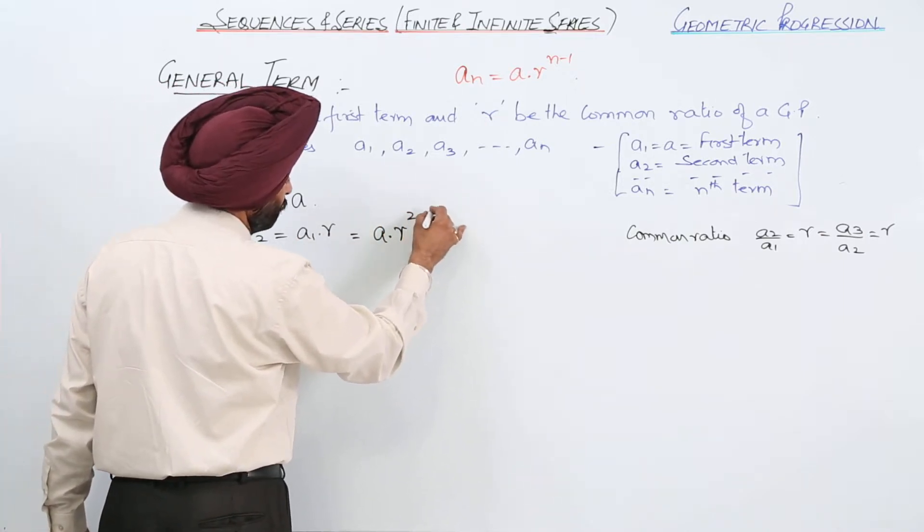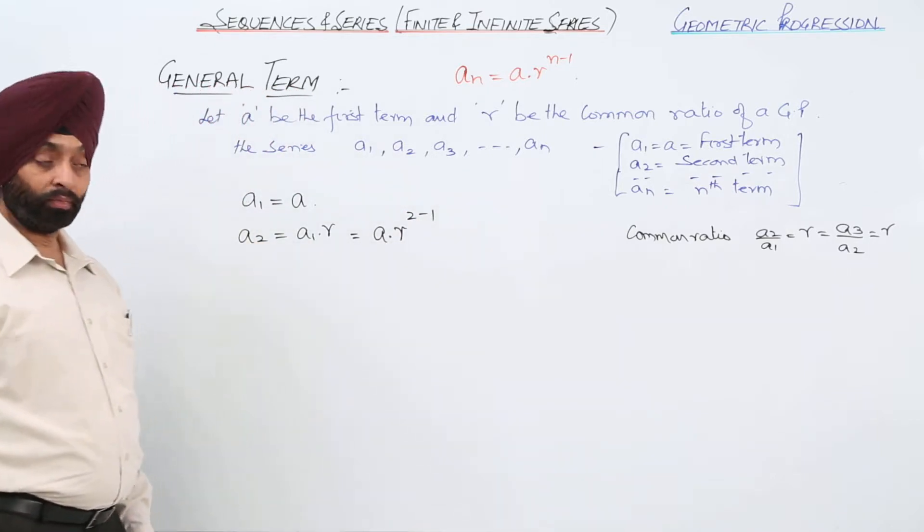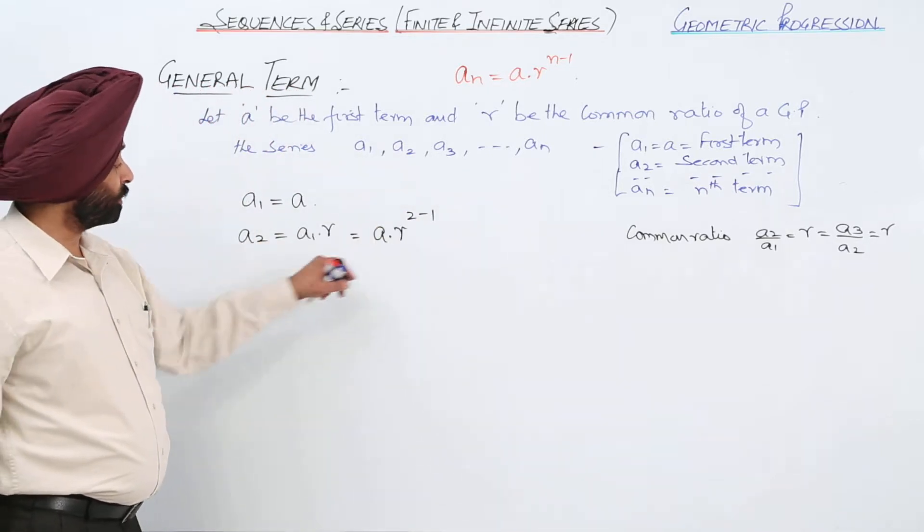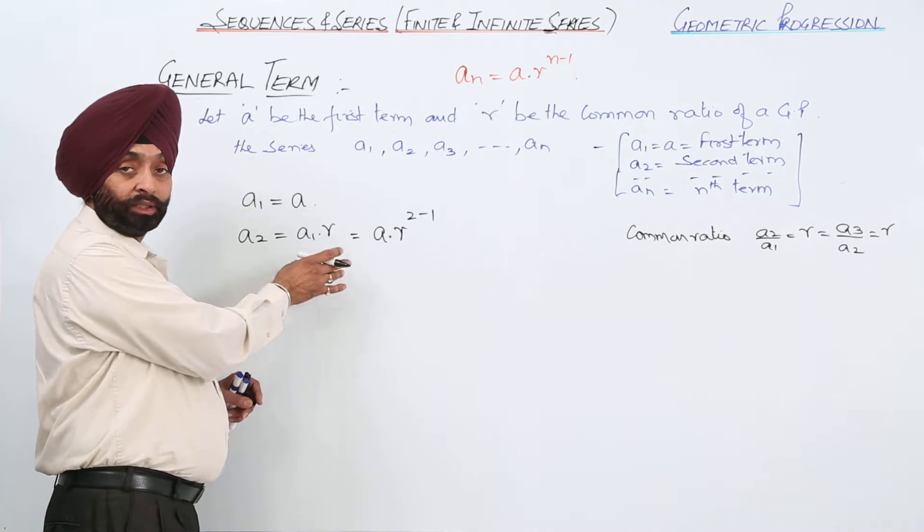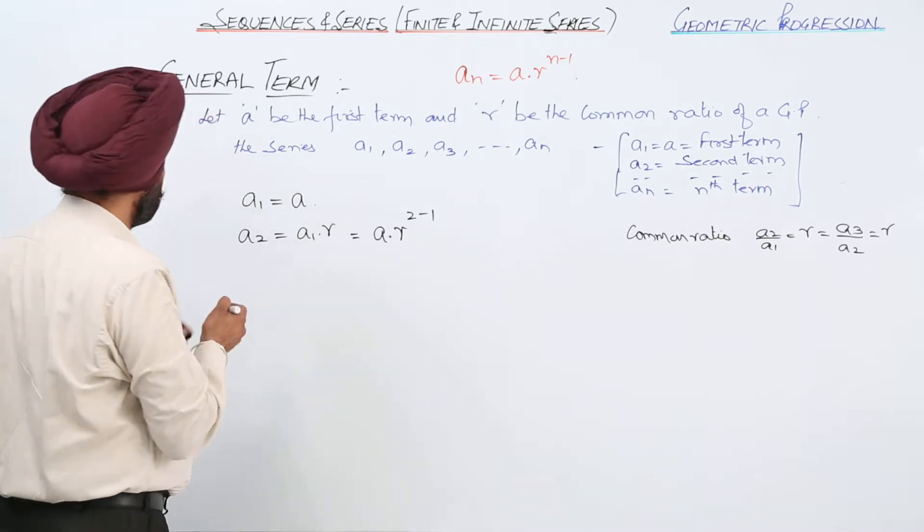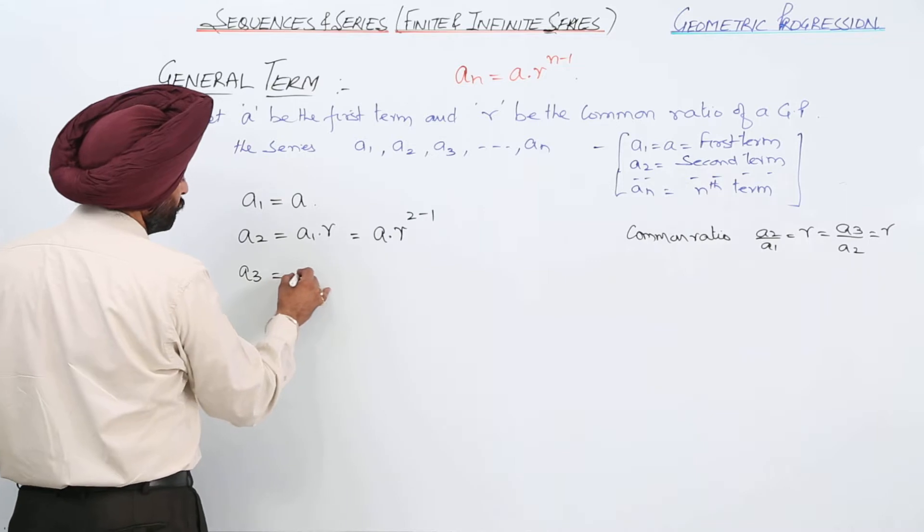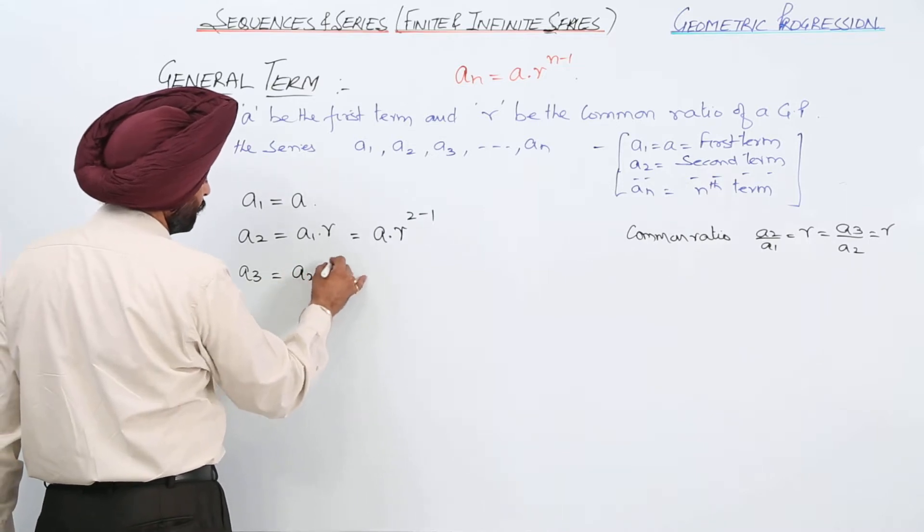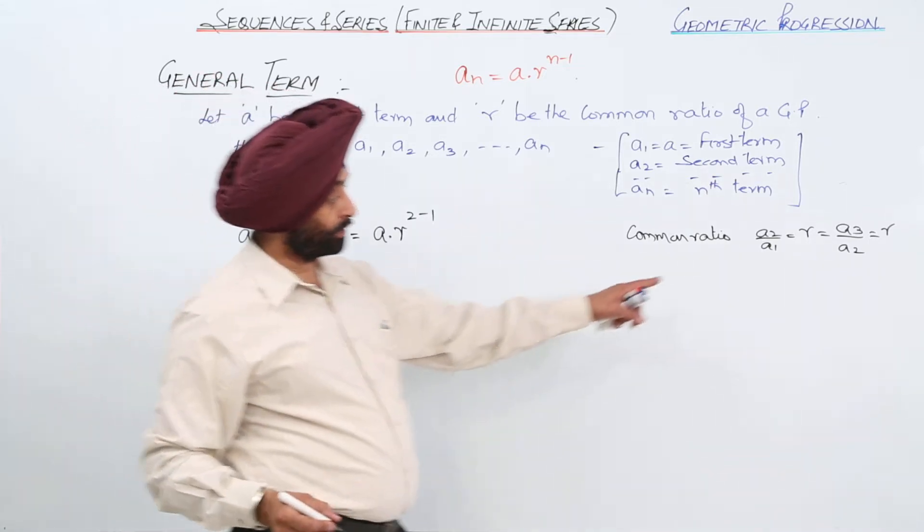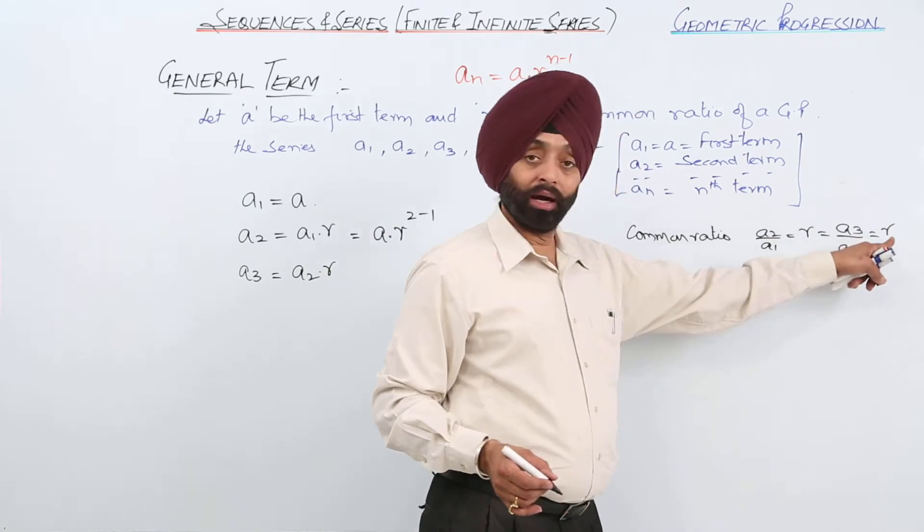So we can write A1 as ar. Now, can I write 2 minus 1? 2 minus 1 is 1, so it means we have not changed it. It is ar only. A3, now to A3, what can you write? A2 times r.